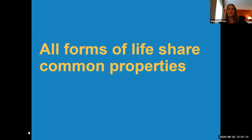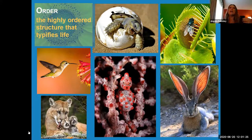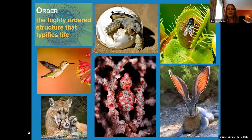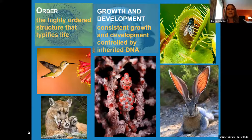All forms of life share some common properties. One of those properties is order — there's a highly ordered structure that typifies life. There's also growth and development, which is controlled by something called DNA or deoxyribonucleic acid, which we're going to study quite a bit in the upcoming lectures.